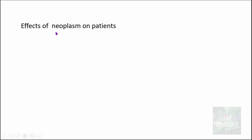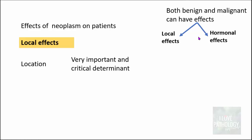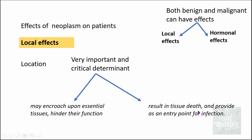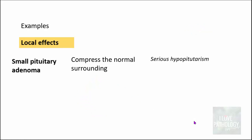Effects of neoplasm on the patients — both benign and malignant tumors can have local as well as hormonal effects. The location of the tumor is a very important and critical determinant of local effects, because these tumors may encroach upon essential tissues and hinder their function. For example, a very small pituitary adenoma, even with minor enlargement, can compress the surrounding normal tissue and result in serious hypopituitarism.